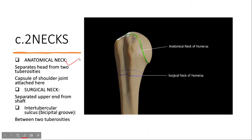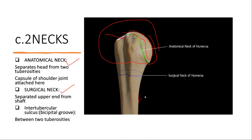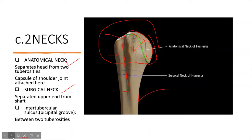There are two necks of the humerus: the anatomical neck and the surgical neck. The anatomical neck is just below the hemispherical head, separating the head from the two tuberosities. The surgical neck separates the whole upper end of the humerus from the shaft. The inter-tubercular sulcus is the groove between the greater and lesser tubercles — this is the bicipital groove.